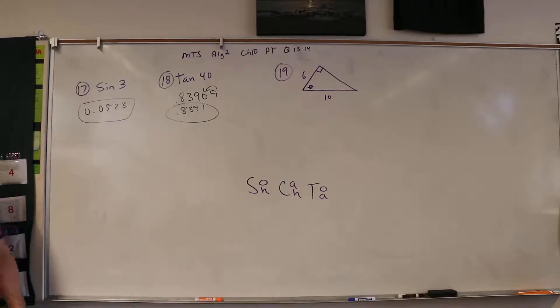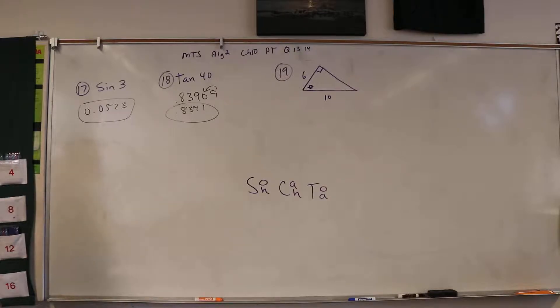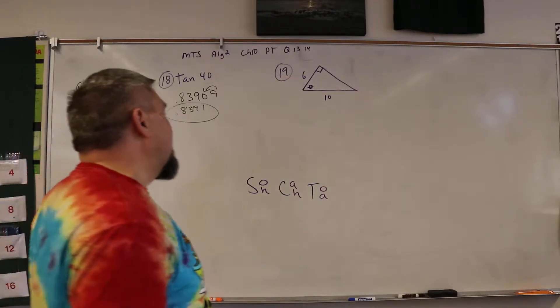This 9 is gonna take that up to a 1: 8, 3, 9, 1. They always want 4 pieces! When you do sine, cosine, tangent, they want you to have 4 pieces! Alright, next!